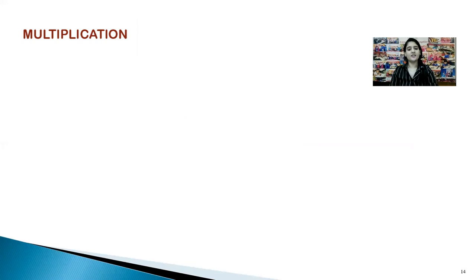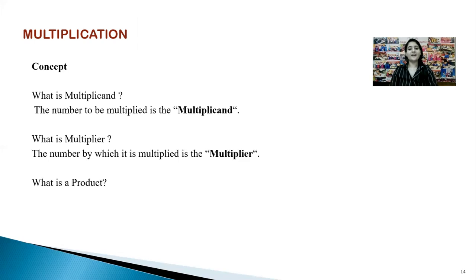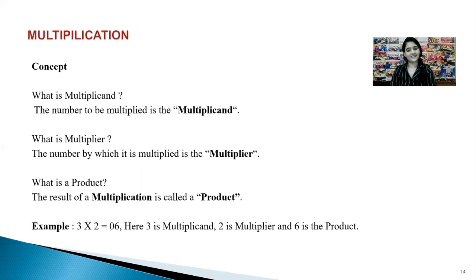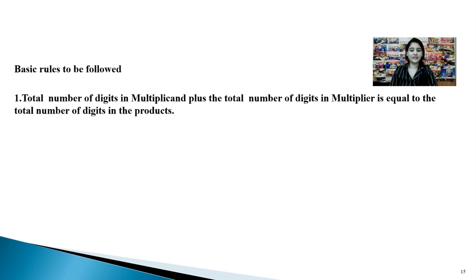Now it's time to move on to multiplication. Before solving problems, let's familiarize ourselves with a few important terms. The multiplicand is the number to be multiplied, and what you multiply it with is the multiplier. The result is called the product. For example, in 3 times 2 equals 6: 3 is the multiplicand, 2 is the multiplier, and the product is written as 06. One of the most basic rules in abacus multiplication is that the number of digits in the product must equal the sum of the digits in the multiplicand and the multiplier.